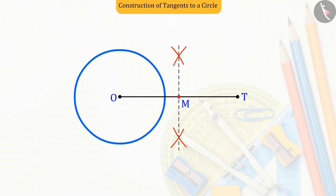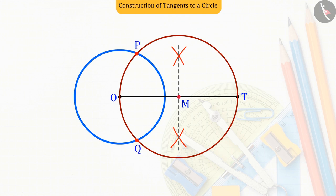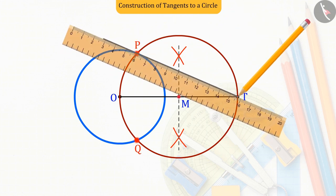The point M is the center, and taking OM and MT as radius, let's draw a circle which intersects the given circle at points P and Q. Now join the point T to the points P and Q.